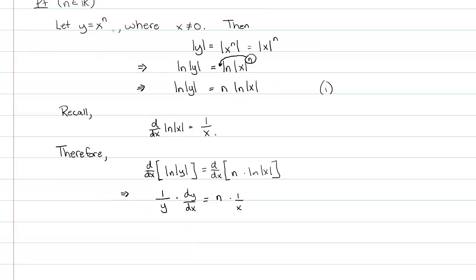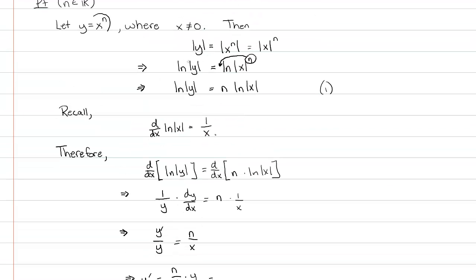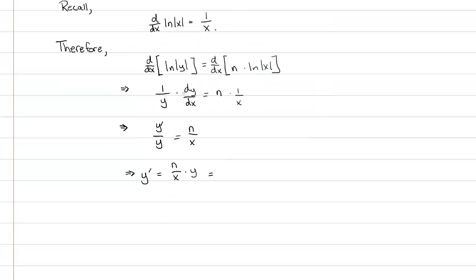Most people would write this as: y prime over y equals n over x. We're actually almost done. All I have to do is multiply both sides by y, so this implies y prime equals n over x times y. And of course y — our original function — is x to the nth power. So I replace y with x to the nth, giving n over x times x to the nth. The powers cancel, and you get that y prime equals n times x to the n minus 1. Notice I did not need any type of special binomial expansion or anything like that. This is actually pretty awesome — a very nice, clean proof.